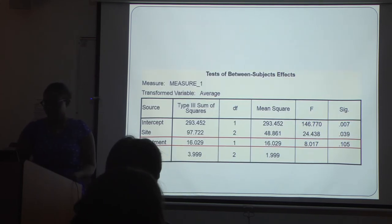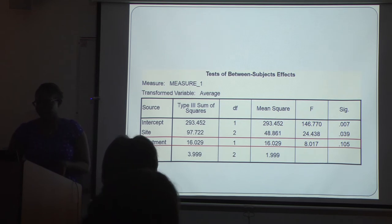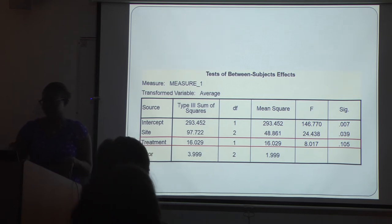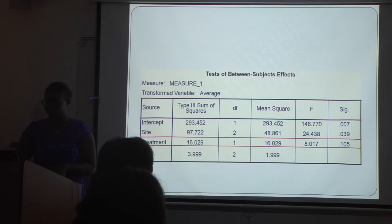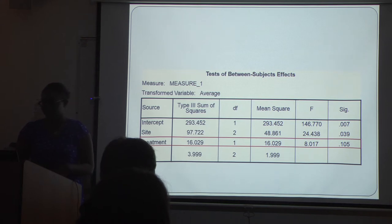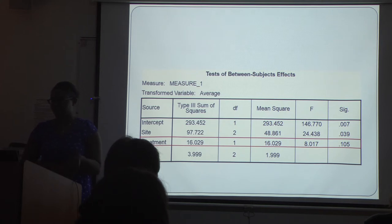The p-value for the difference between restored and reference sites was 0.105. The graphs show that the reference sites did have a higher ground beetle abundance per site section. The difference in the relative ground beetle abundance was significantly different between each site, with a p-value of 0.039.